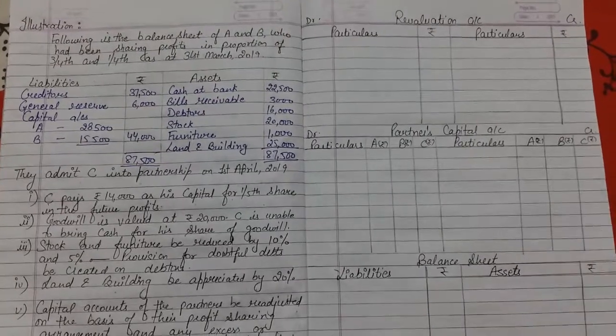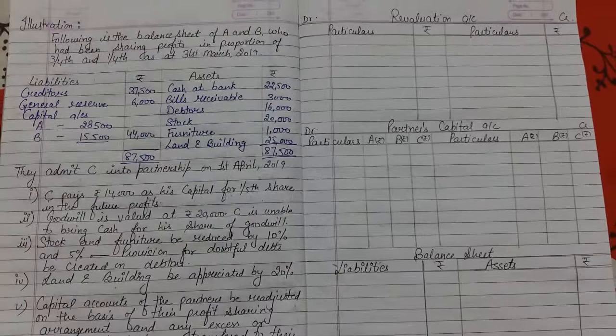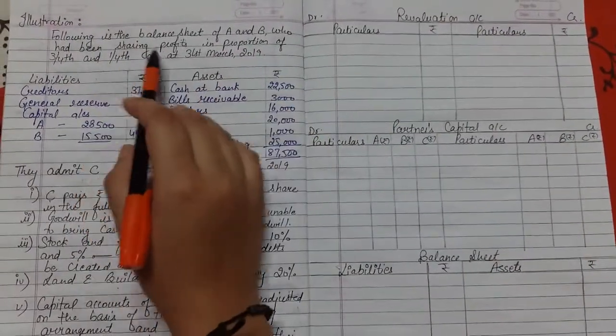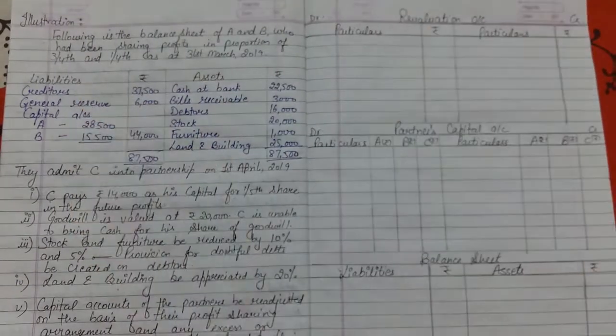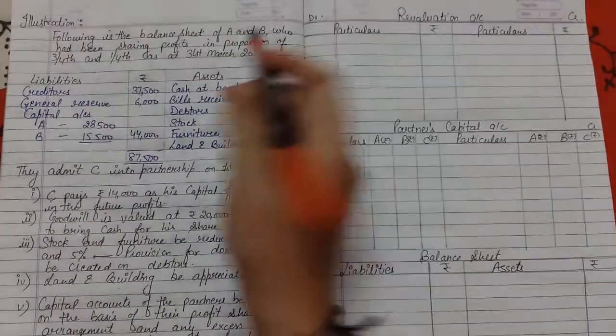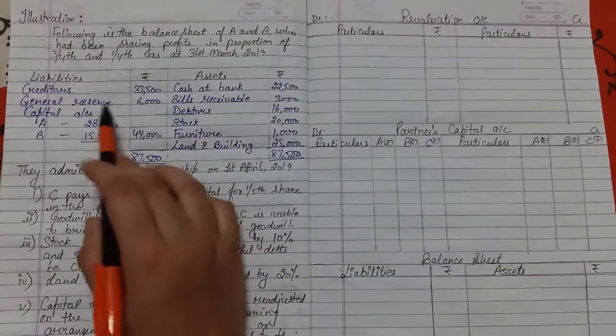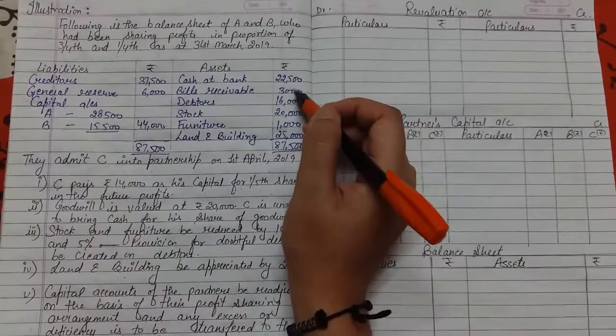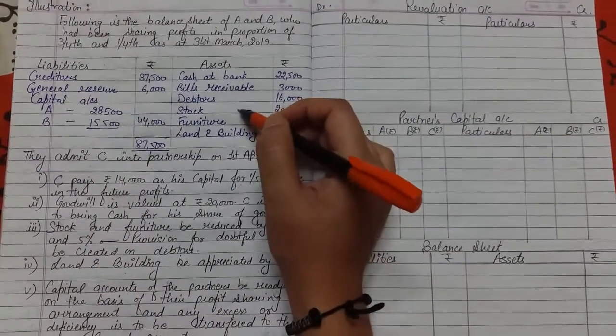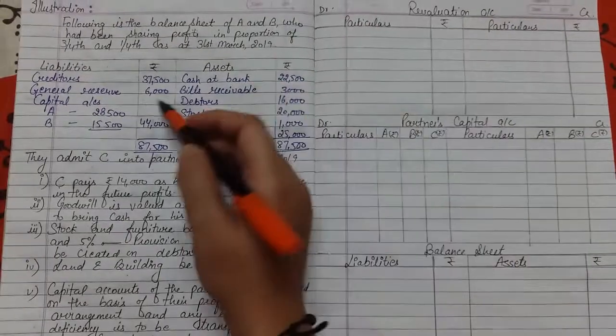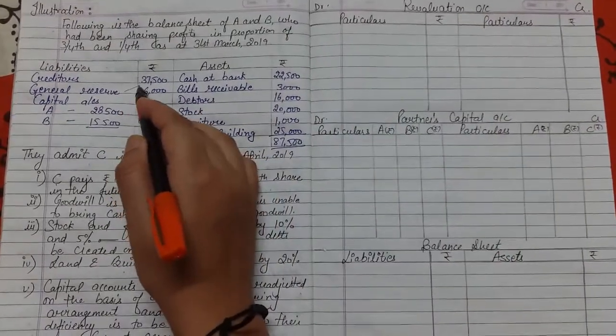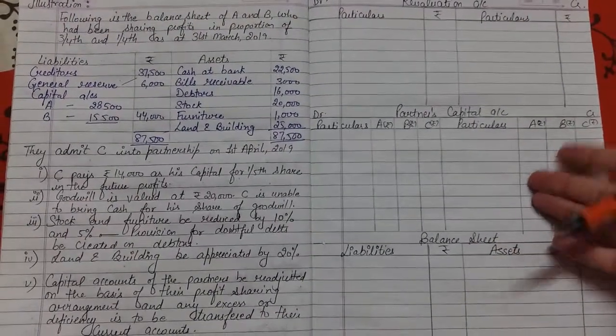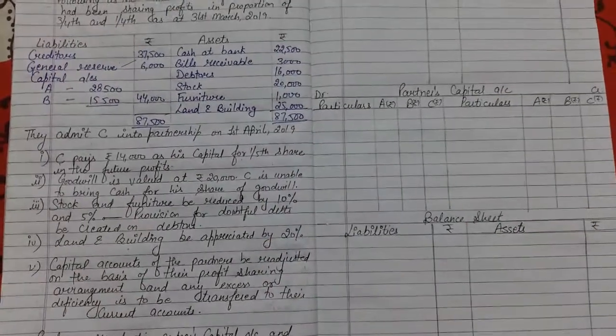Here students, next illustration of adjustment of capital topic. The question is the following balance sheet of A and B who had been sharing profits in the proportion of three-fourths and one-fourth as at 31st March 2019. Creditors, general reserve, capital accounts - cash at bank, bills receivable, debtors, stock, furniture, and land and building. Nothing extra here, only one general reserve which we have to distribute among the partners in old profit sharing ratio to the old partners.